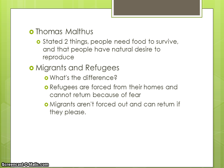Thomas Malthus was a demographer who studied population characteristics. He stated two things: that people need food to survive and that they have a natural desire to reproduce. This leads to the thought that population would outgrow people's ability to produce food, so there would be too much overpopulation, not enough food to supply everyone, and people would start to die.